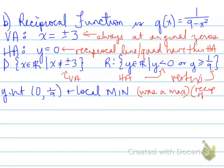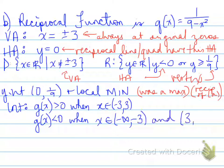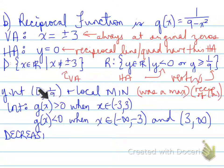The reciprocal function has no x-intercepts since it never crosses y equals 0. The function has an increasing interval from negative 3 to 3, and decreasing intervals from negative infinity to negative 3 and from 3 to infinity — which are the same boundary values as the positive and negative intervals we found earlier. We'll stop here and continue in video 2.